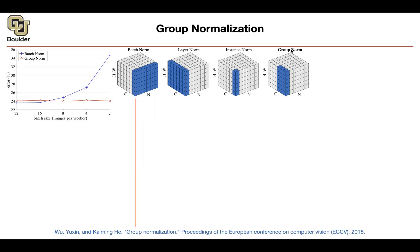Group normalization is something between layer norm and instance norm. You create a bunch of groups per your channel dimension. In this case, you have two groups and each one has three members per the channel dimension. You then compute your statistics within each group. That's group normalization, and it seems to be effective.